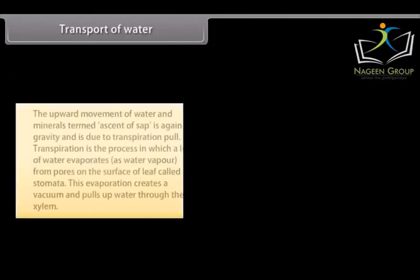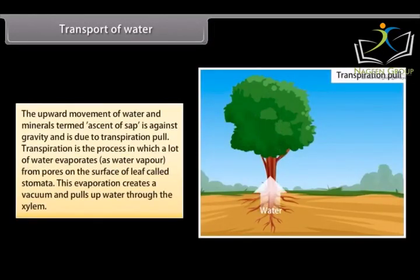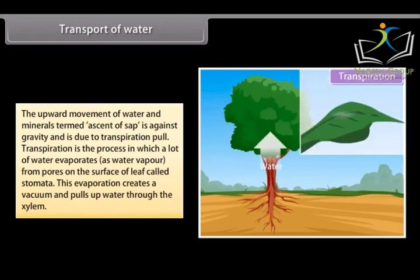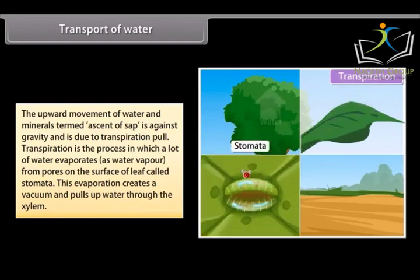Transport of water: The upward movement of water and minerals termed ascent of sap is against gravity and is due to transpiration pull. Transpiration is the process in which a lot of water evaporates as water vapor from pores on the surface of leaf called stomata. This evaporation creates a vacuum and pulls up water through the xylem.